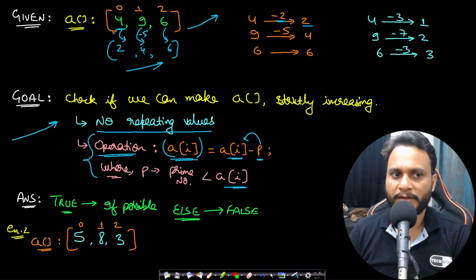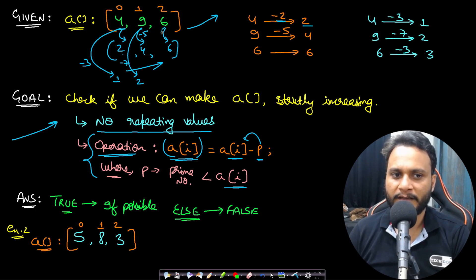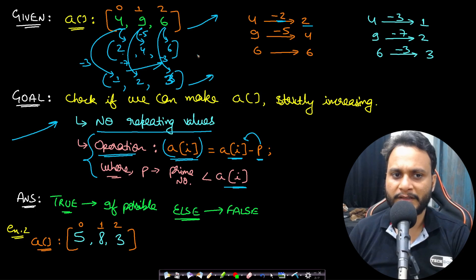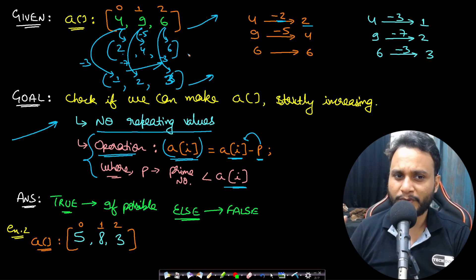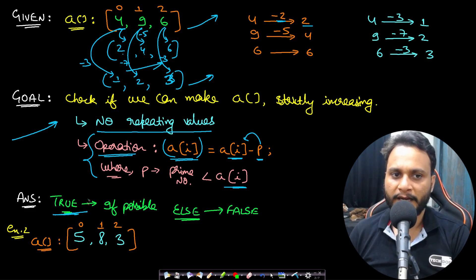Another configuration: reduce 4 to 1 by subtracting 3, reduce 9 to 2 by subtracting 7 (also a prime less than 9), and subtract 3 from 6 to make it 3 — giving [1, 2, 3], also strictly increasing. There can be multiple valid configurations, but we only need at least one. If there is at least one such configuration possible, we return true.